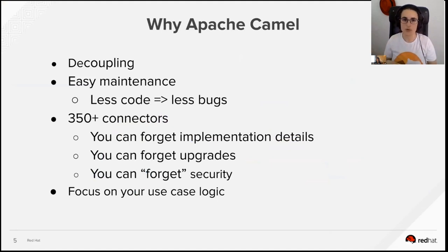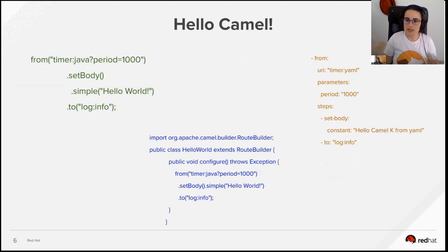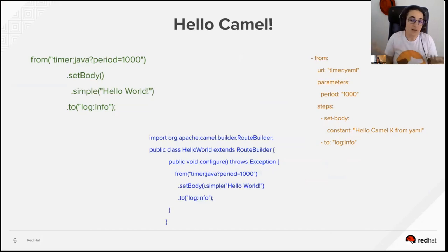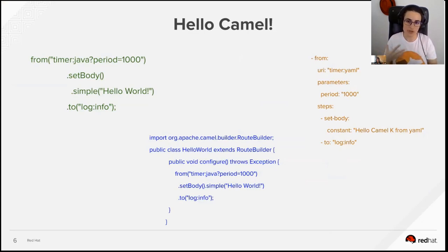Camel is often called the building blocks of software because you can easily connect and replace components. This lets you focus on your use case logic. Camel supports multiple languages for the DSL: in green we see a JavaScript timer printing hello world every second; in blue the same in Java with the required class decorations; and in orange a YAML version — all equivalent, and you choose the language you're most comfortable with.